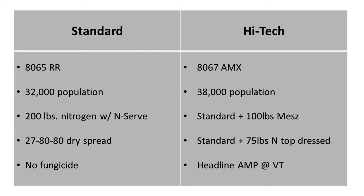On the high-tech side, we have the same hybrid with additional traits, 80-67, planted at a population of 38,000. We added 100 pounds of MEZ, top dressed an additional 75 pounds of nitrogen, and made an application of Headline AMP at VT.